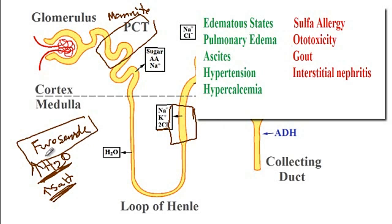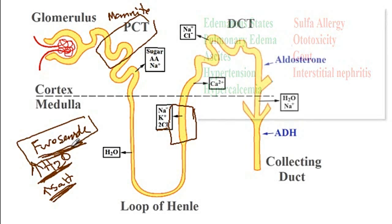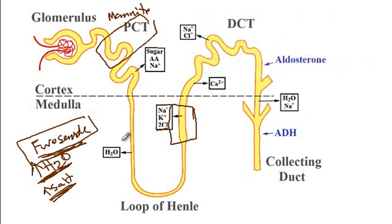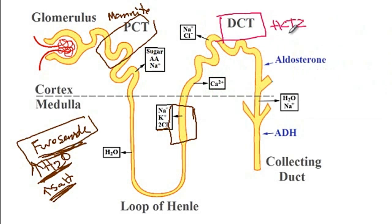Side effects of furosemide include sulfa allergy, ototoxicity, gout, and interstitial nephritis. The next class of medications acts on the distal convoluted tubules — these include hydrochlorothiazide and chlorthalidone, which inhibit the NaCl co-transporter.